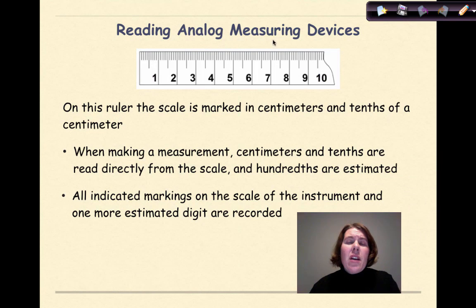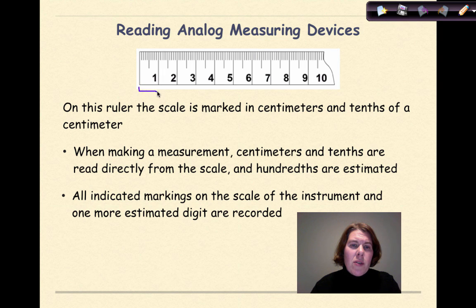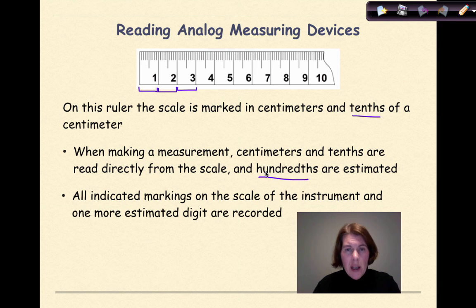When you're reading analog measuring devices, you want to be really, really careful. So on this ruler, the scale is marked in centimeters. So each one of these is representing a centimeter as we go here. So here's two centimeters and then three centimeters. And then we have tenths of a centimeter, which we know is a millimeter. When making a measurement, centimeters and tenths are read directly from the scale. And if we were to go out to the hundredths position, we'd have to estimate that.